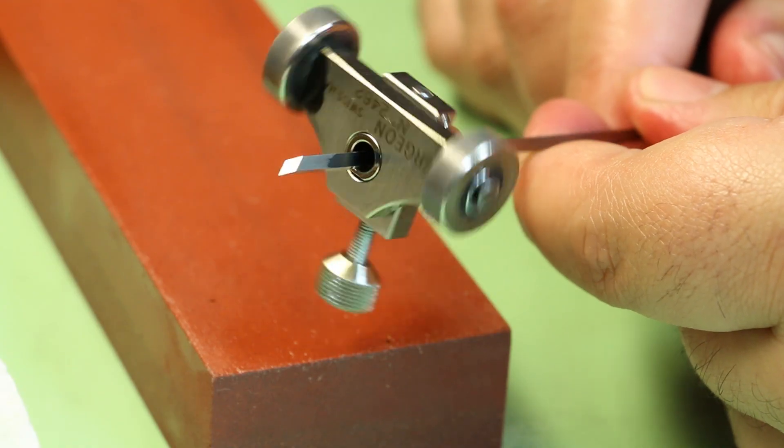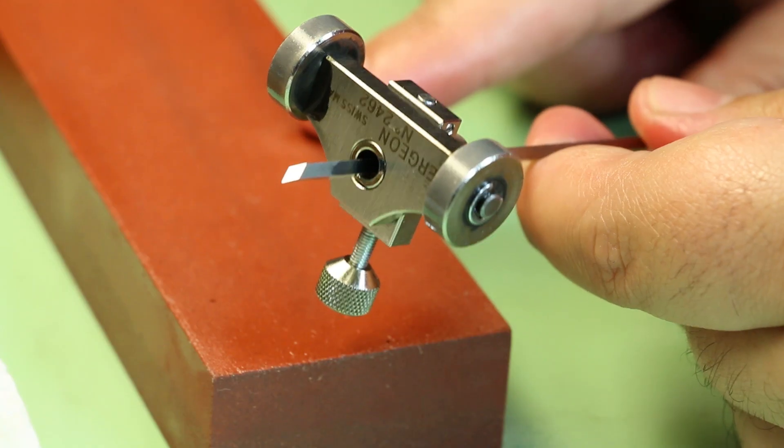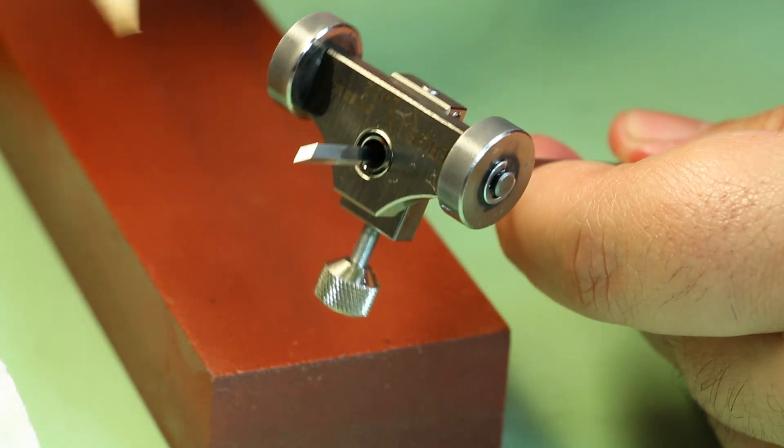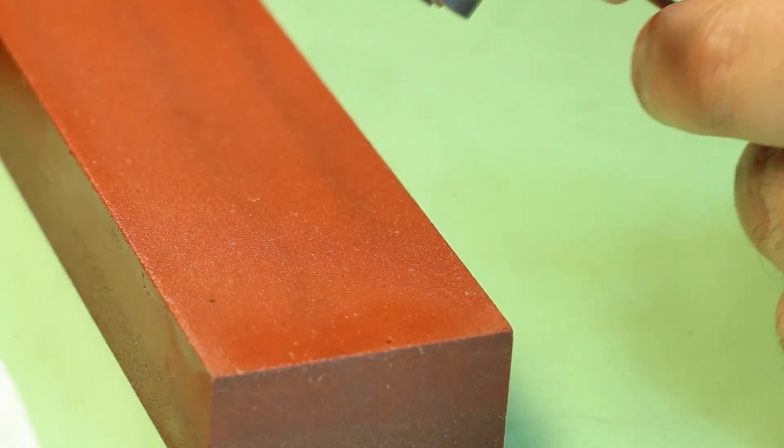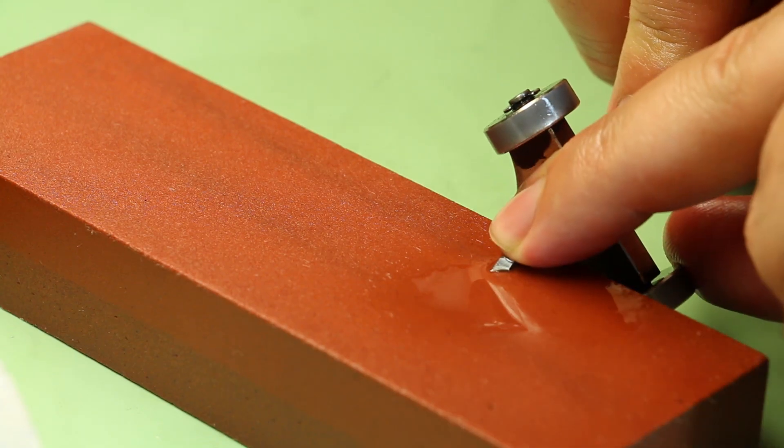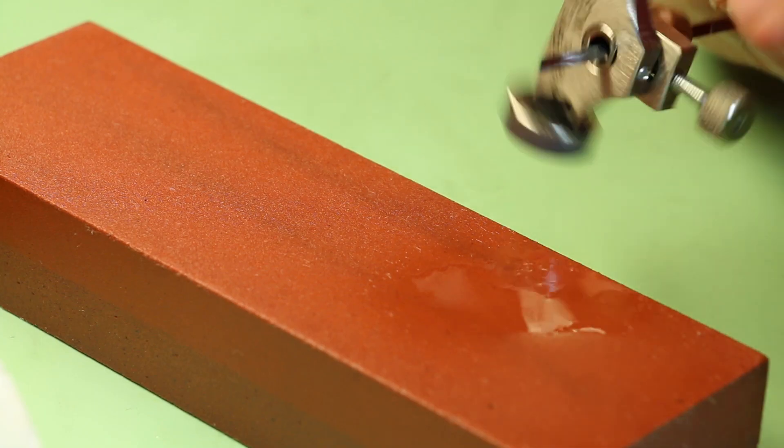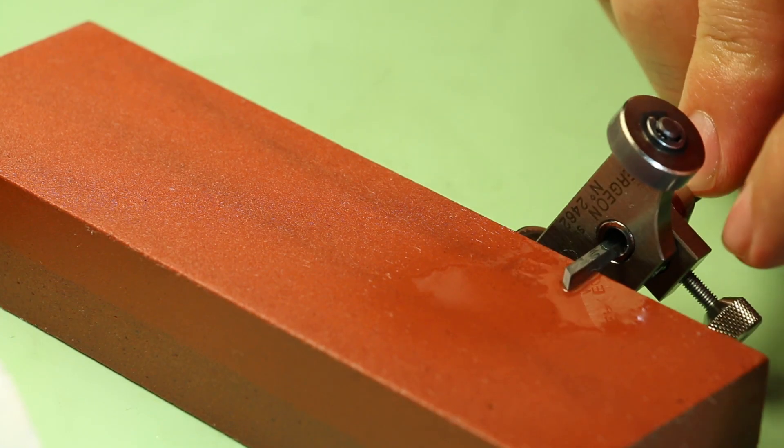So now I've finished sharpening the graver on the fine side of the stone. What I'm going to do now is that there's a little burr on these two edges which I'm simply going to take, I'm going to put it flat and drag it across.